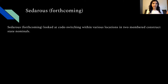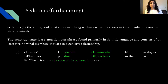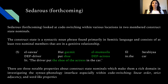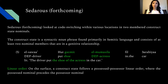In a previous study, I looked at code switching within two-membered construct state nominals. The construct state is the syntactic noun phrase found primarily in Semitic languages, consisting of at least two nominal members in a genitive relationship — as in example five, 'the shoe of the actress.' There are three notable properties of construct state nominals, making them a rich domain for investigating the syntax-phonology interface, especially within code switching.